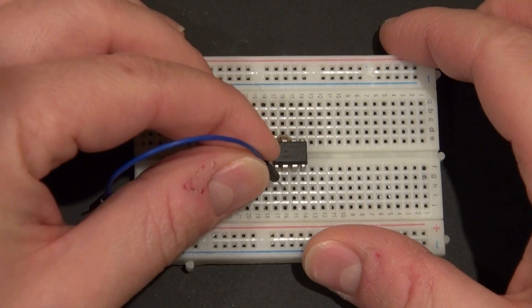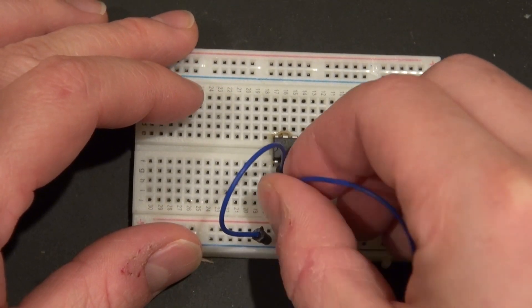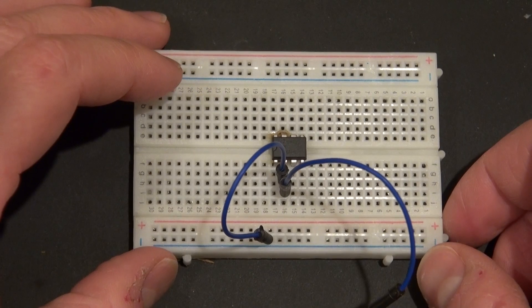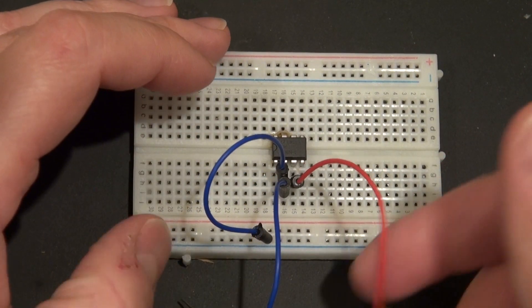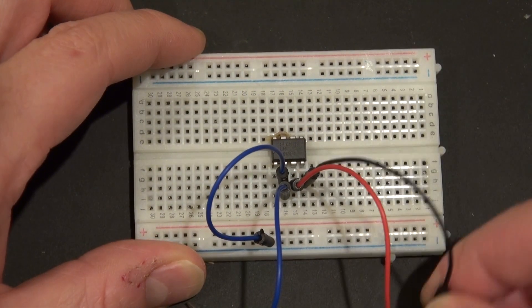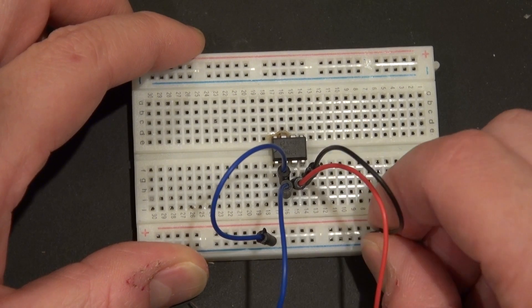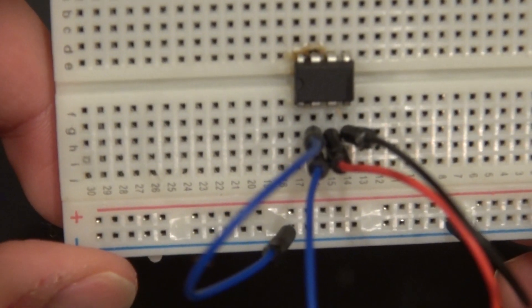So what I'm going to do is take a jumper cable and connect pin 2 to ground. Another jumper cable from pin 2 and leave it loose. Jumper cable to pin 3, leave it loose. A jumper cable to pin 4 and connect that to ground. And it should look just like this.